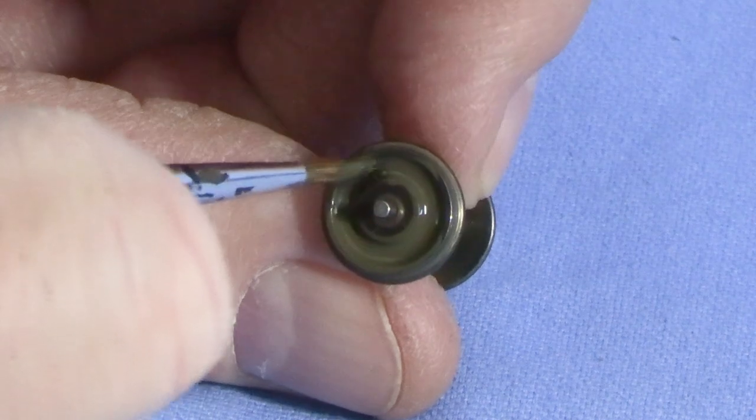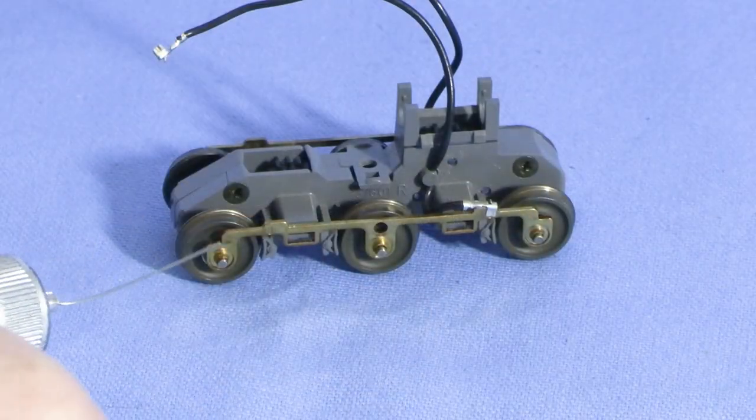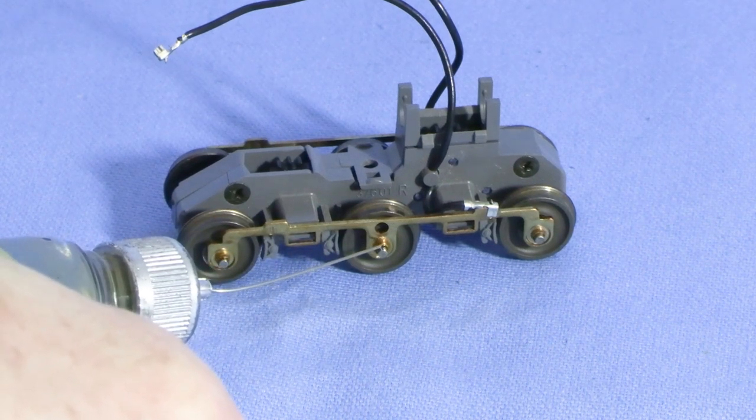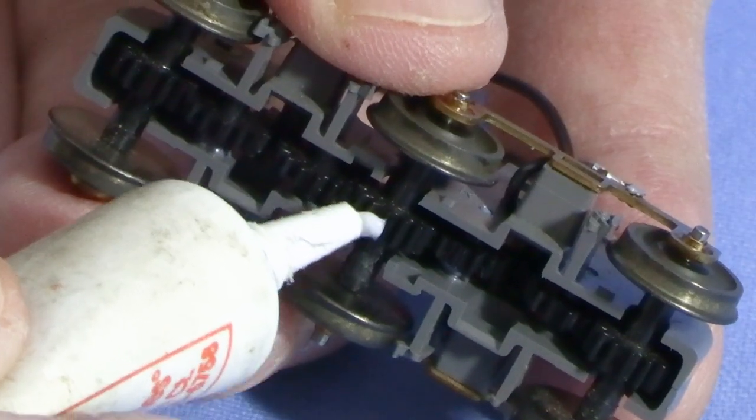With outside bearing trucks like these, be careful to keep paint away from the axle ends. As I reassemble the trucks, I'll put a tiny drop of conductolube on the ends of the axles. I'm using the lube very sparingly. I'll also put a small dab of white grease on the gears. The trucks roll much more freely now.